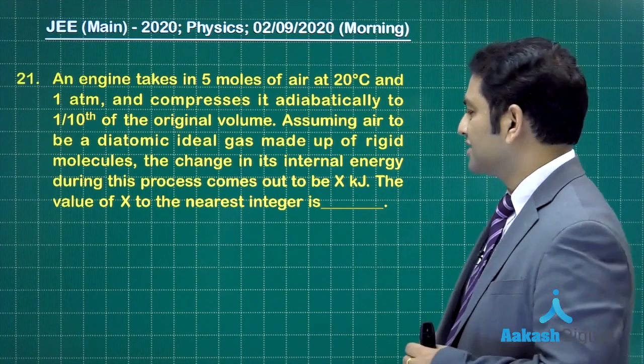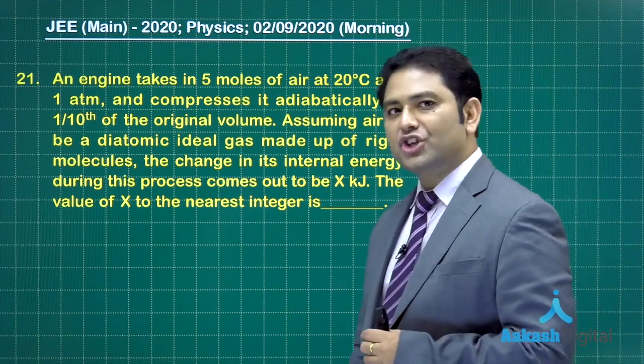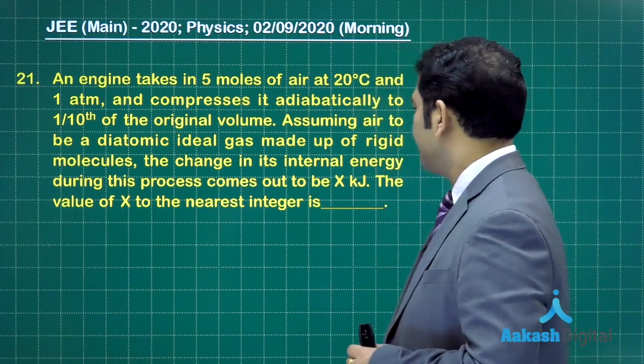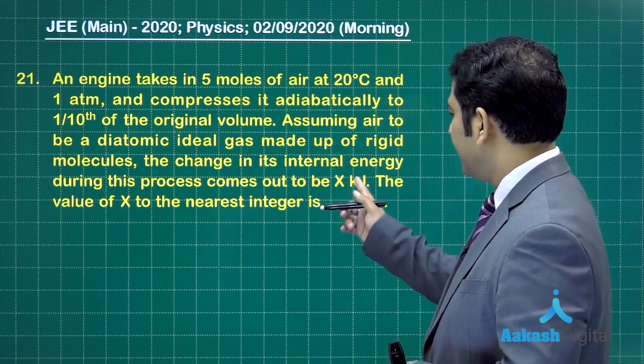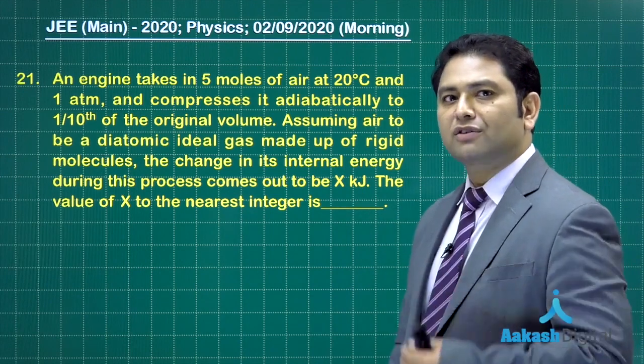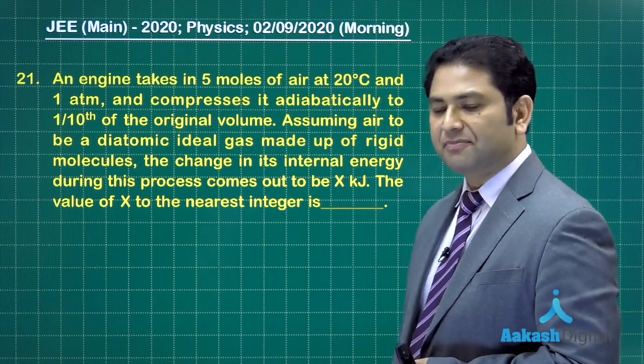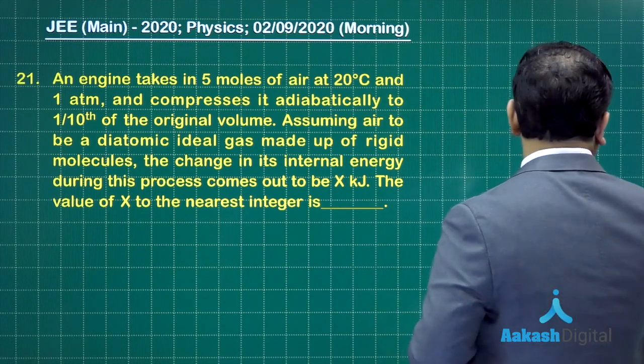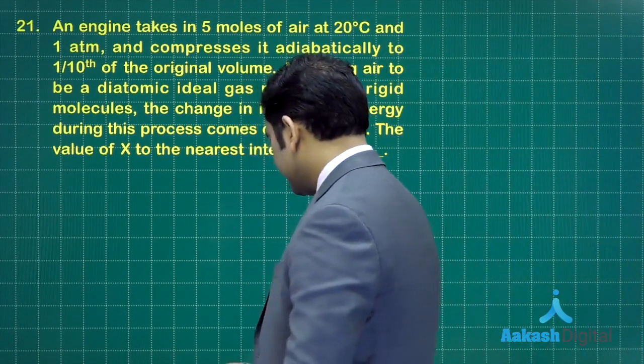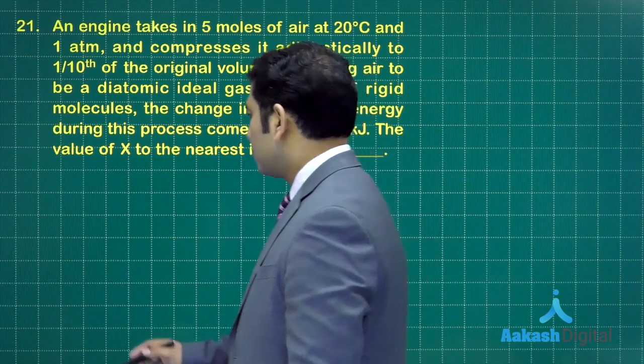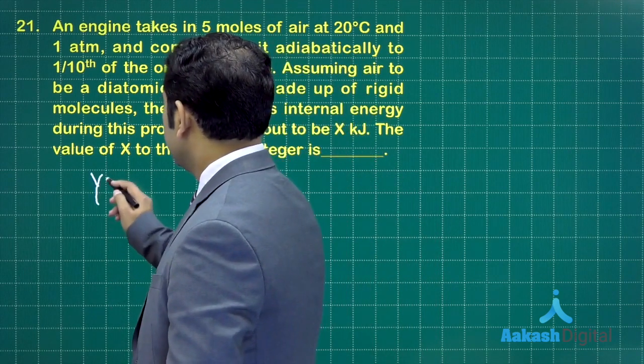This is compressed adiabatically to one-tenth of the original volume, and the gas that we have is diatomic. During this process we need to calculate the change in internal energy. The answer has to be reported as x kilojoules, so we need to find the value of x. Because it is diatomic, the value of gamma would be 7 by 5.